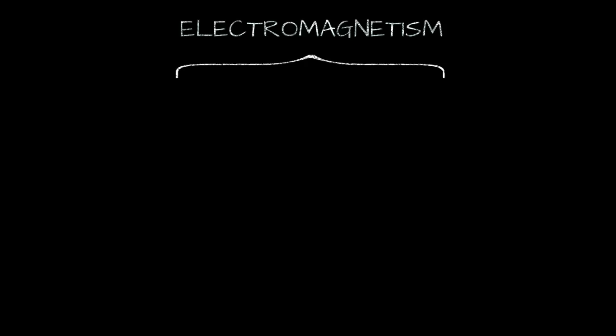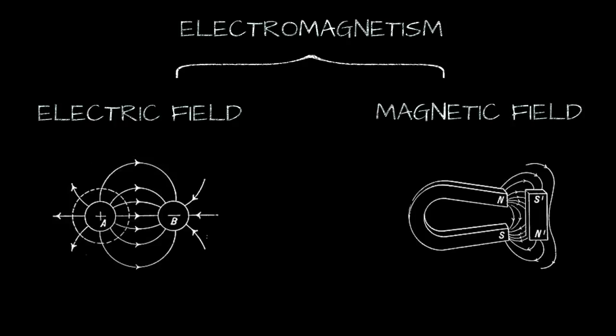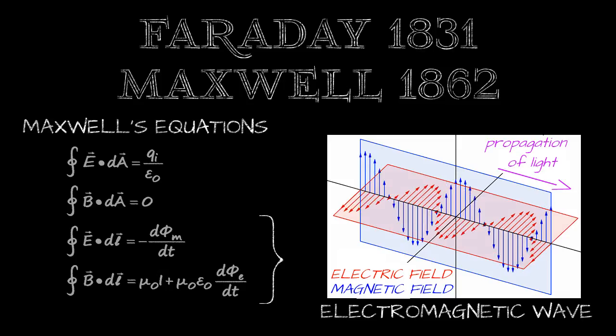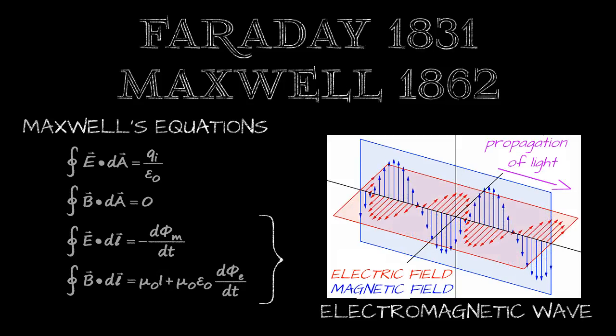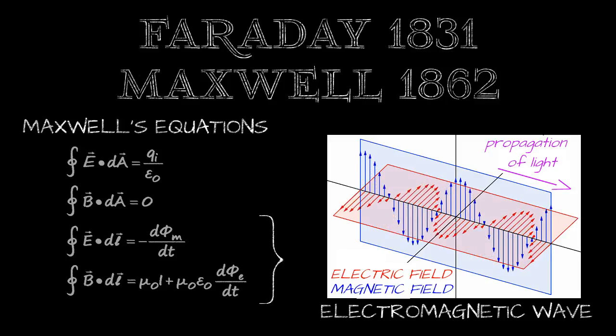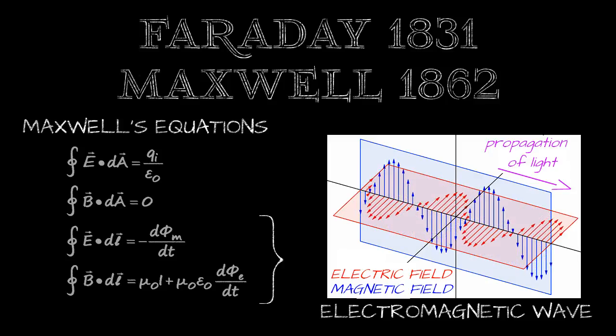Even if electromagnetism is a single unified phenomenon, it is useful to describe it by using two distinct fields — one electric, one magnetic. These fields can interact: a changing electric field creates a magnetic field, and a changing magnetic field creates an electric field. We discovered that the creation and propagation of light can be explained by the mutual interaction of electric and magnetic fields. Light is an electromagnetic wave.